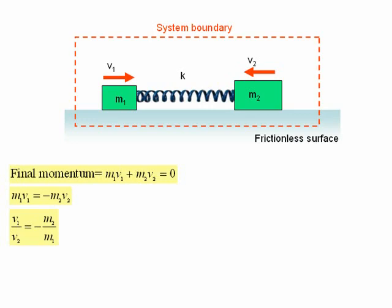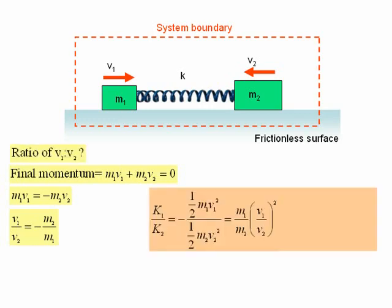Now let us look at the ratio of kinetic energies of the blocks as their separation decreases. K1 over K2 is equal to half m1 v1 squared over half m2 v2 squared, which is equal to m1 over m2 times v1 over v2 squared, which is equal to m1 over m2 times minus m2 over m1 all squared, which equals m2 over m1.